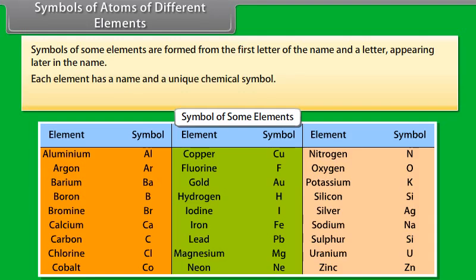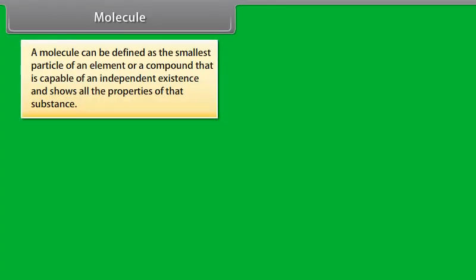Dalton was the first scientist to use the symbols for elements in a very specific sense. When he used a symbol for an element, he also meant a definite quantity of that element, that is, one atom of that element.